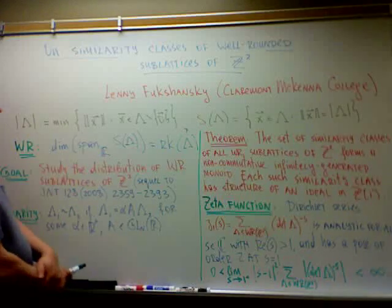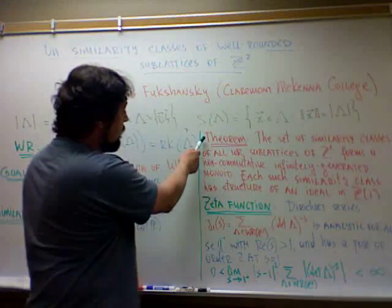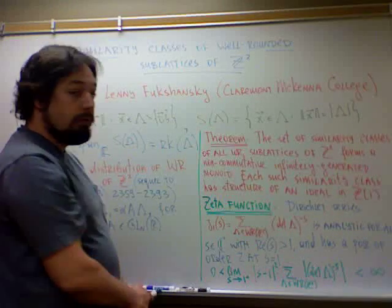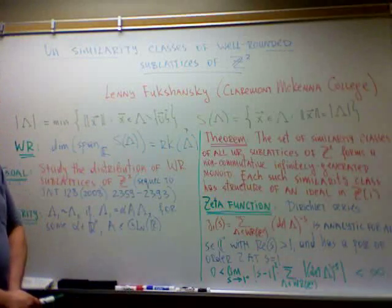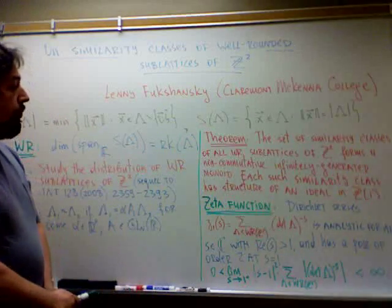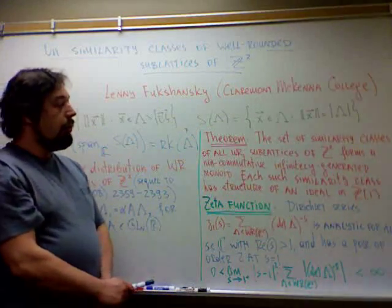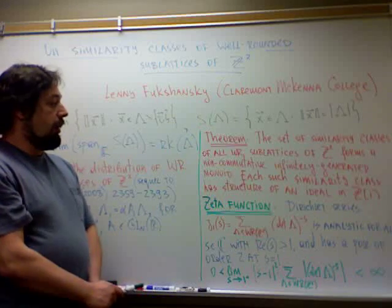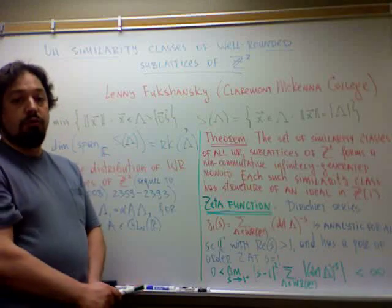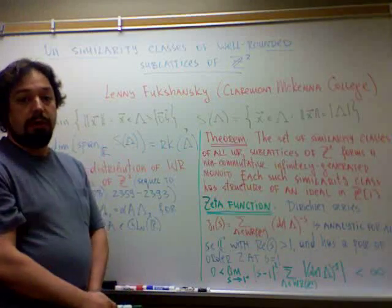The main theorem we prove is that the set of similarity classes of all well-rounded sub-lattices of Z² forms a non-commutative infinitely generated monoid. We do this by relating the similarity classes to a certain subset of primitive Pythagorean triples, showing that there is a bijective correspondence.